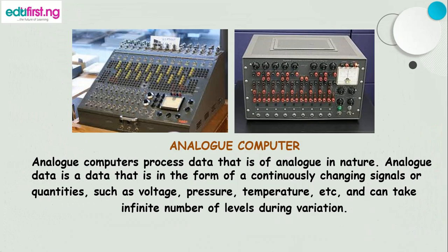What is an analog computer? Analog computers process data that is analog in nature. Analog data is data in the form of continuously changing signals or quantities such as voltage, pressure, temperature, and so on. This analog data can take an infinite number of levels during variation. An analog computer is said to work in real time — that is, it corresponds to time in the real world and can be used to monitor and control events as they happen. Computers used in chemical, manufacturing, and oil industries for process control, temperature, and pressure monitoring are analog computers. Examples include car speedometers, thermometers, and so on.